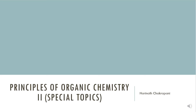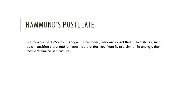The Hammond postulate was put forward in 1955 by George Hammond. What he reasoned out was: if there are two states — the transition state and an intermediate derived from it — that are similar in energy, then they are similar in structure. The key words here are: similar in energy means similar in structure.